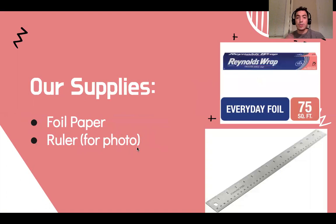I know that's a lot. We're going to go through the rules and the steps. Remember our supplies: we have one roll full of foil paper — that is it. You are doing it on your own. Don't get help from your teacher, your friends, or your siblings. Just you, just try it out. A ruler is also needed, but only for the photo — don't use it for the actual building of the tower. If you don't have a ruler, it's okay, don't freak out.